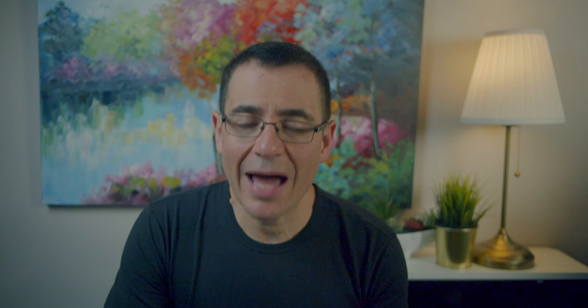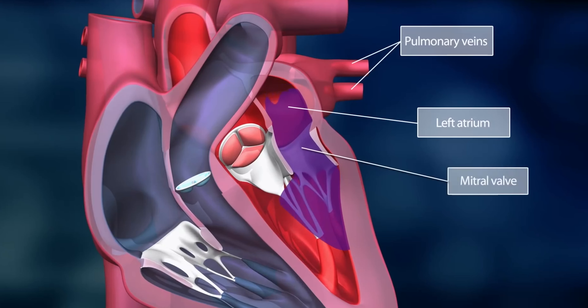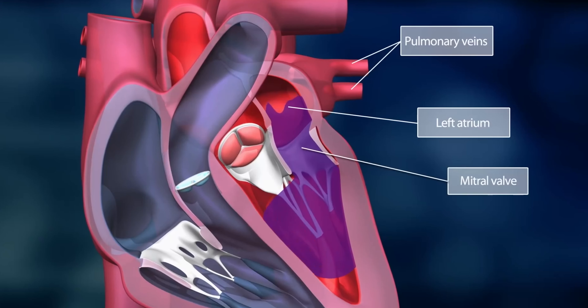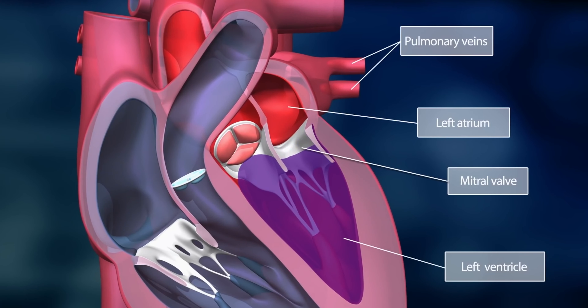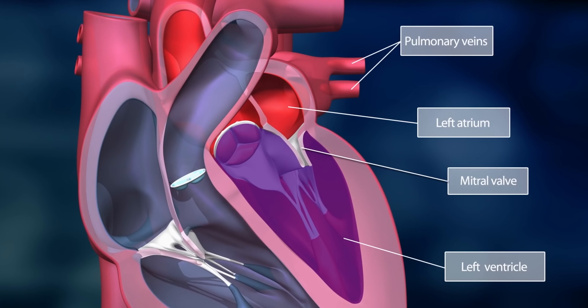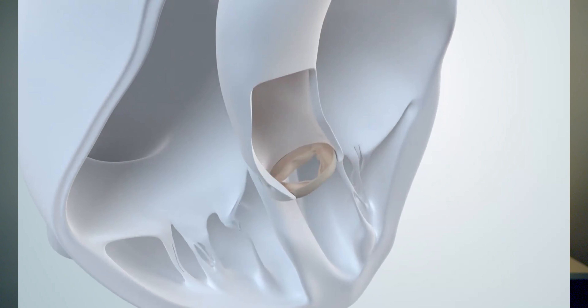The left ventricle pumps blood out through the aortic valve into the largest artery of our body, called the aorta. You can think of the blood pumping out of the heart, full of oxygen and nutrients, being delivered through the aorta and all the various blood vessels from head to toe. However, there are conditions that can affect this aortic valve, and this valve can become narrowed and then start causing symptoms.